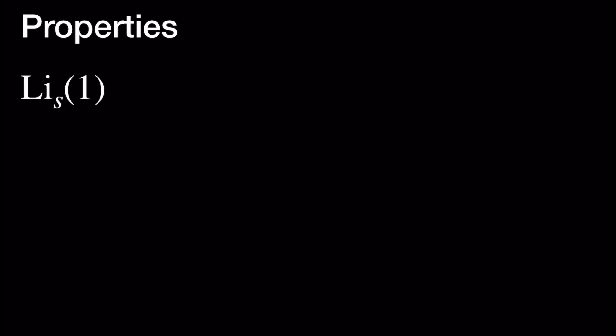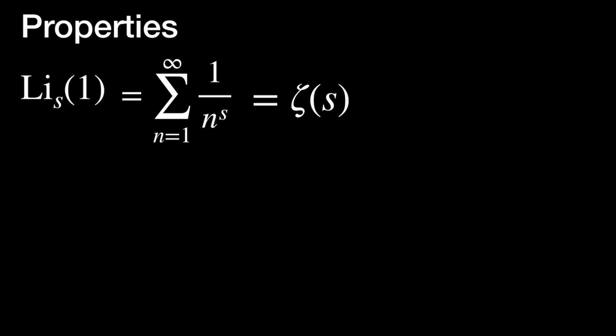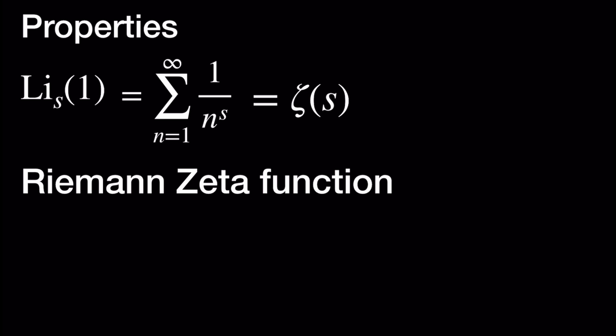Now let's look at Li sub S at 1. By definition, this is equal to the sum as n goes from 1 to infinity of 1 over n to the S. This is precisely the Riemann zeta function evaluated at S, and of course this is convergent as long as the real part of S is greater than 1.